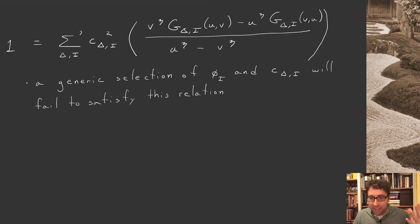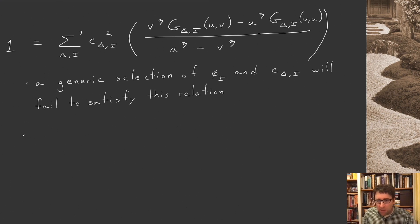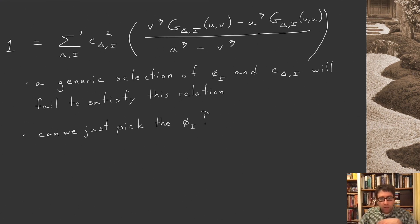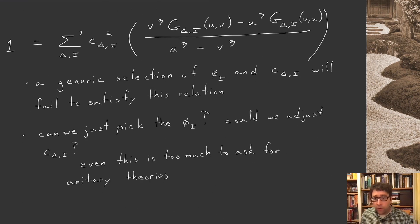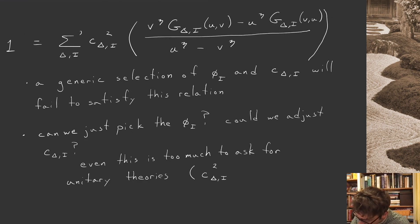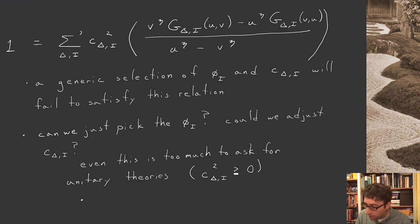Maybe we should be less ambitious. Can we just pick the spectrum of the CFT and then adjust the three-point functions so that this expression and all similar expressions for other four-point functions are satisfied? It turns out that even this is too much to ask for unitary theories. In unitary theories there are further constraints on the deltas and three-point functions — for example, the c_{delta_i}² must be greater than zero.